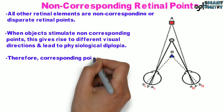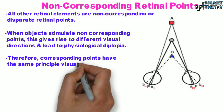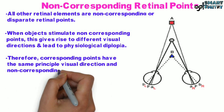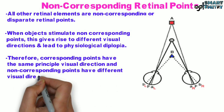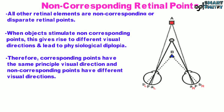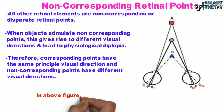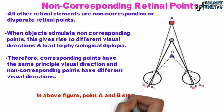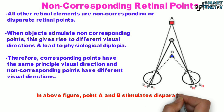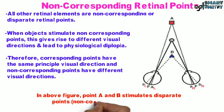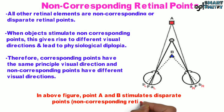Therefore, corresponding points have the same principal visual direction and non-corresponding points have different visual directions. In the figure above, point A and point B stimulate disparate points, or non-corresponding retinal points.